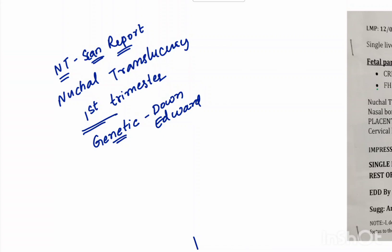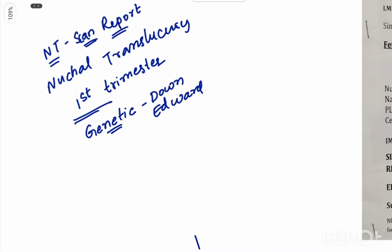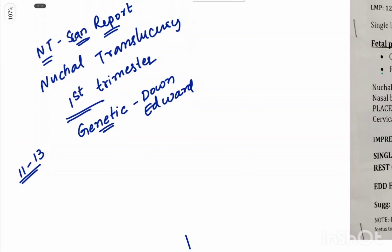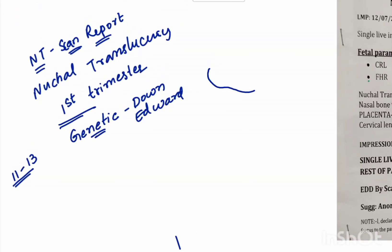We do this scan to check the baby. We measure the fluid at the back of the baby's neck. If there is excess fluid, it may indicate a genetic disorder. If the fluid is not elevated, the result is considered normal.